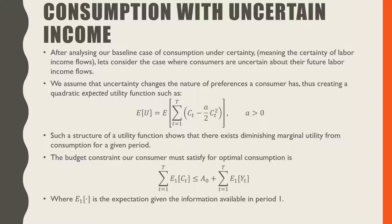The budget constraint for our consumer must satisfy the optimal consumption. That is, the summation of all expected consumption at time t, where t goes from 1 to T, based on the information in period 1, must be less than or equal to the endowment A0, plus the summation of all expected labor income flows at time t, where t goes from 1 to capital T. E1 is the expectation given the information available in period 1.